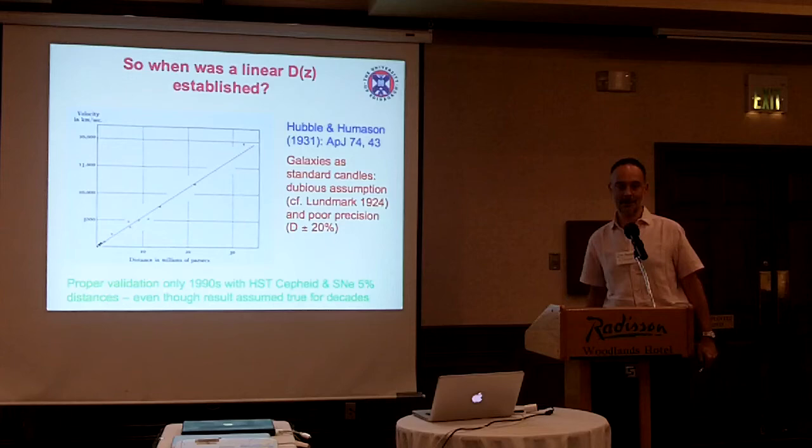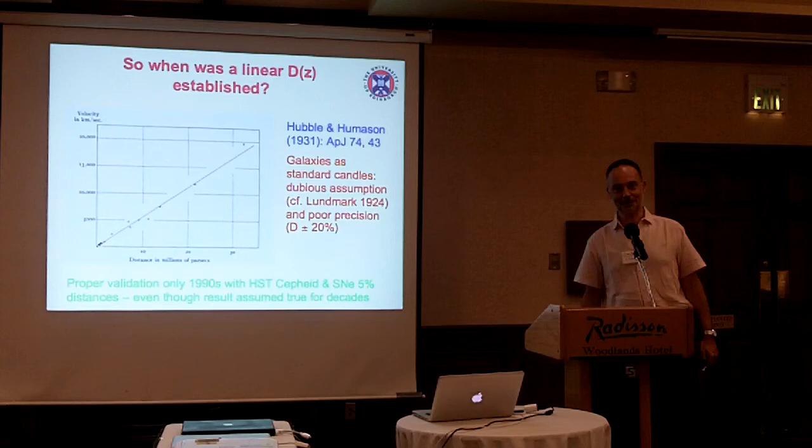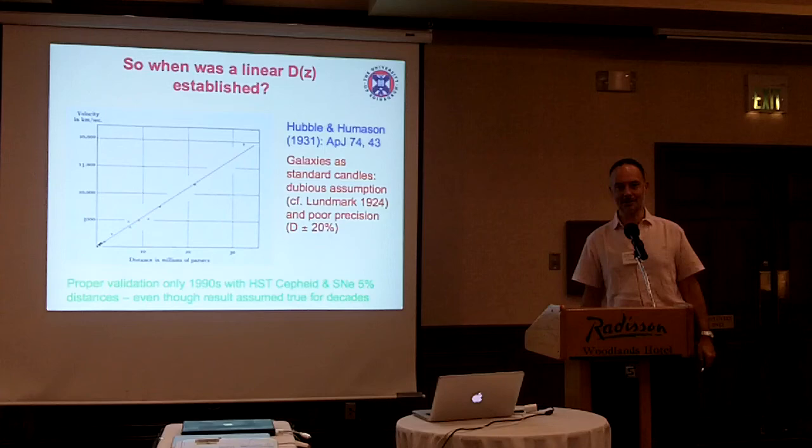Does it agree with modern values done the same way using the same shell? Yes, in that I've made a modern calculation of what the dipole is that fits Slipher's data — those galaxies, those redshifts, those positions on the sky. But they have more galaxies at the same distance. Obviously it's the right order of magnitude.